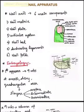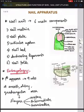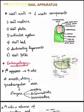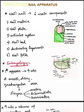In this video we are going to see about the nail apparatus. The nail is an integral organ of the digital tip which plays many functions like enhancing tactile discrimination, protecting the fingertip, and many other important functions. This nail unit contains six main components which include the nail matrix, nail plate, cuticular system, nail bed, anchoring ligaments, and the nail folds.